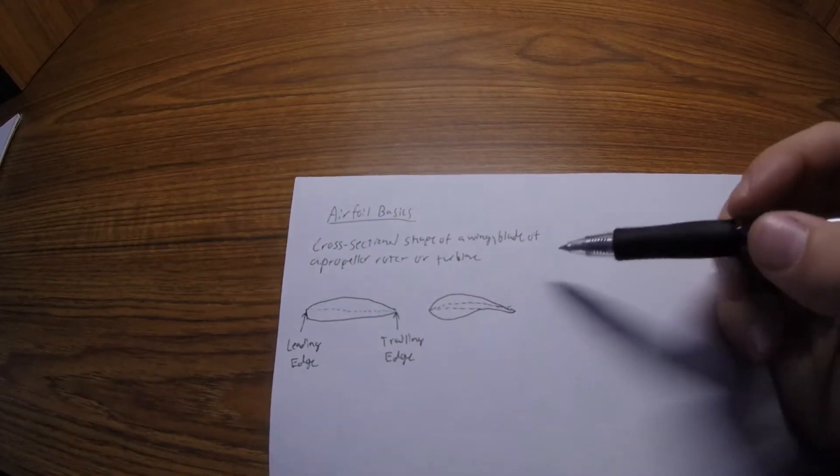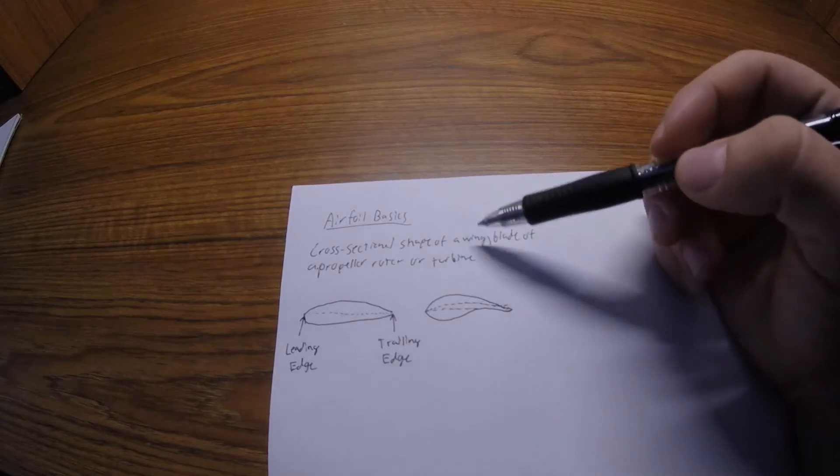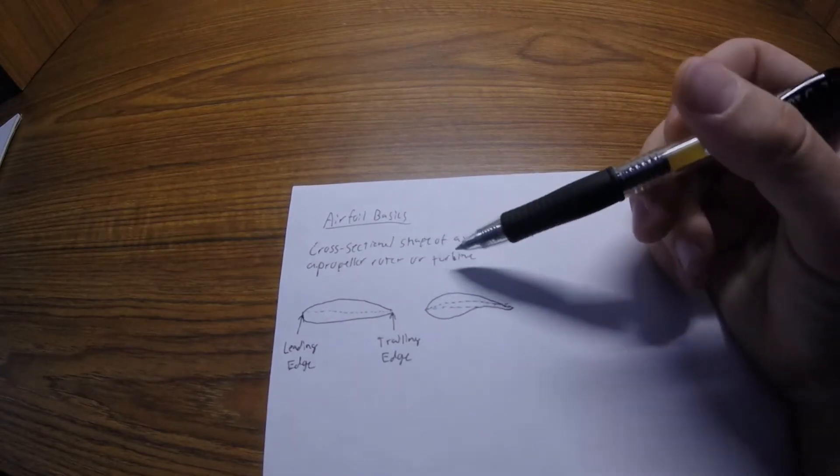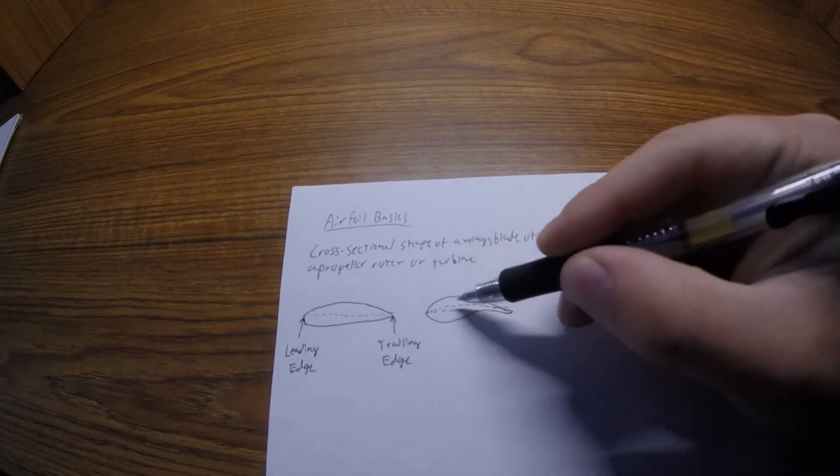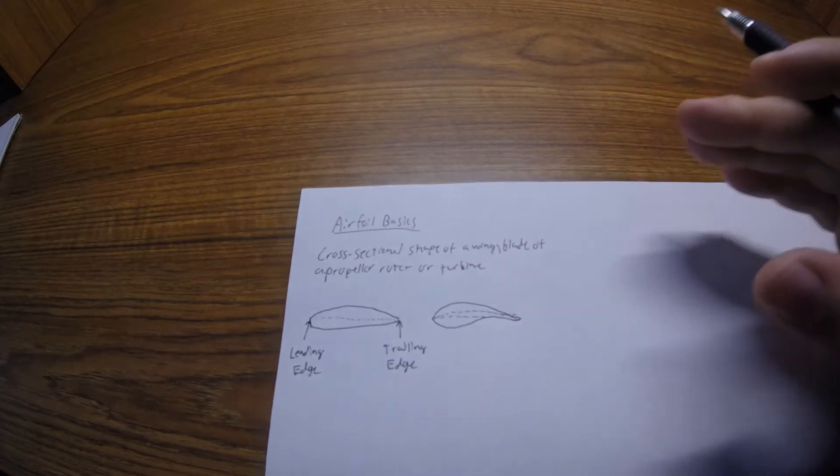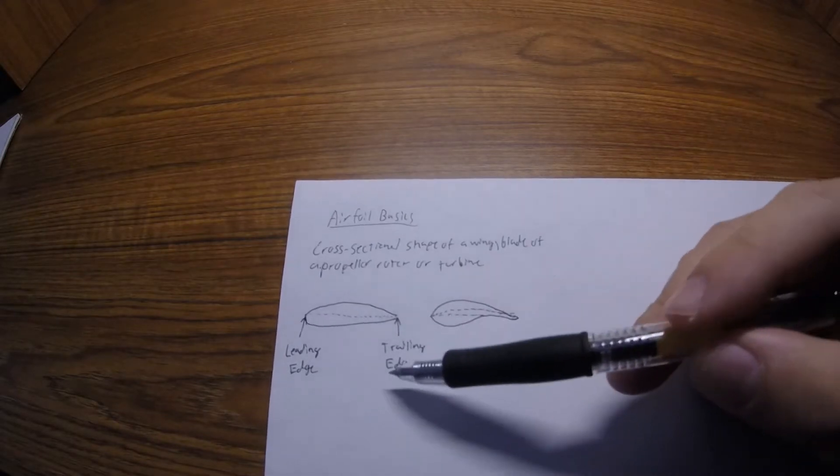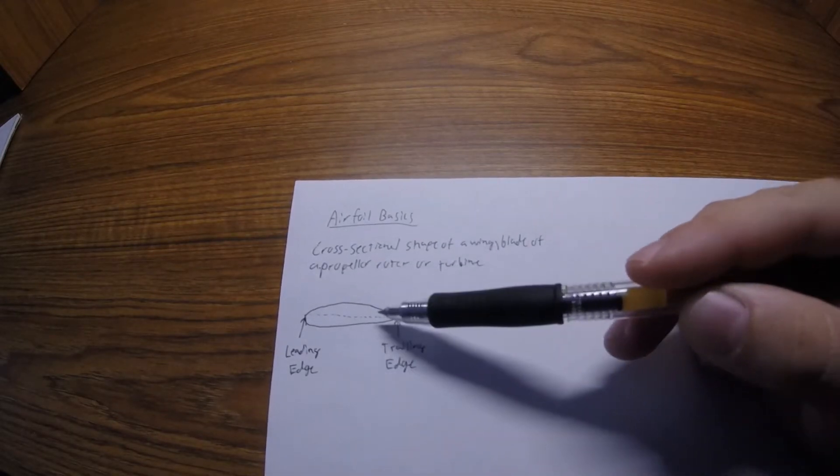An airfoil is simply the cross-sectional shape of a wing, a blade of a propeller, rotor, or turbine. It's simply the cross-sectional area, not the entire wing. If you took an airplane wing or propeller wing and sliced it in half and looked at the cross-sectional area, that is what an airfoil is.